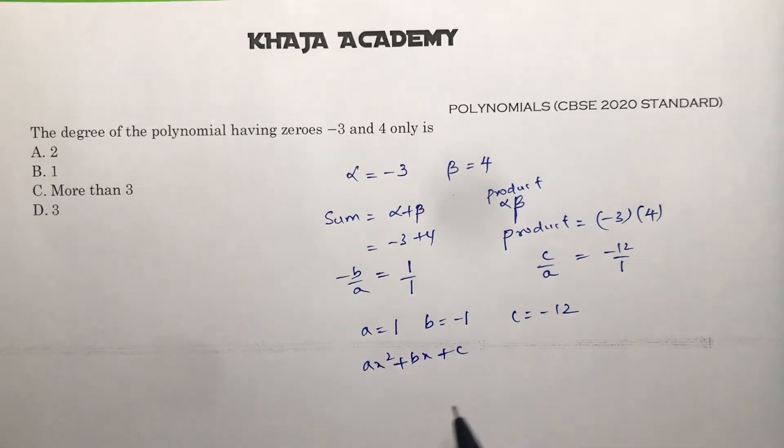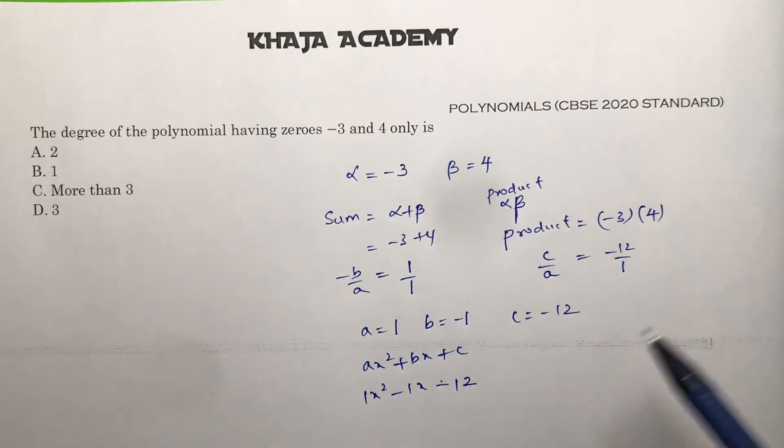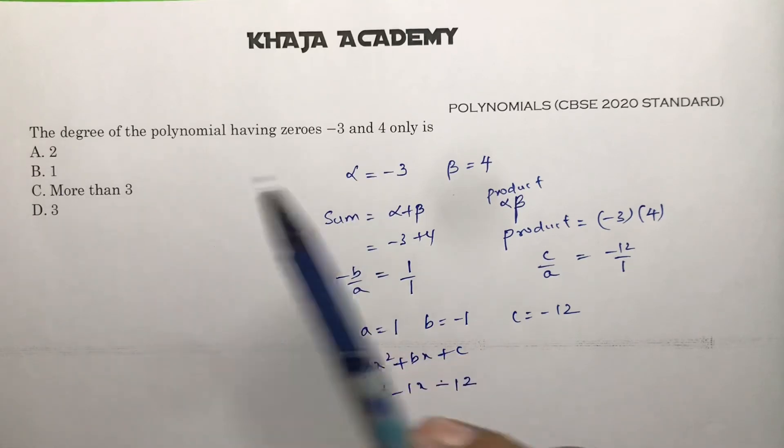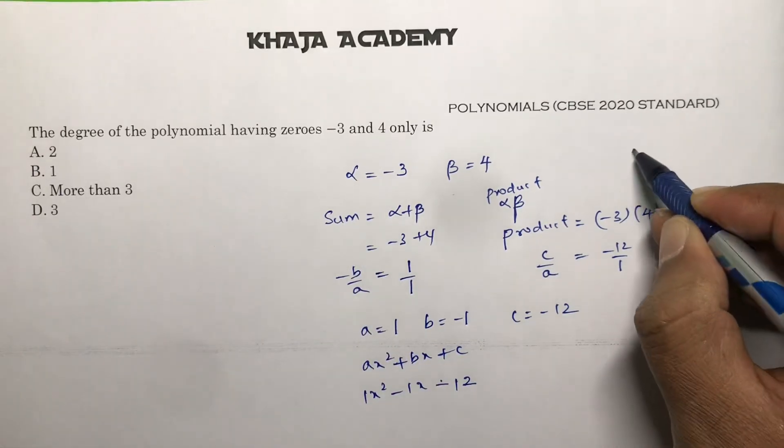So 1x square minus 1x minus 12. So here if you'll observe, the degree is 2. And directly you can say the degree of the polynomial having two zeros is 2. So correct option is B.